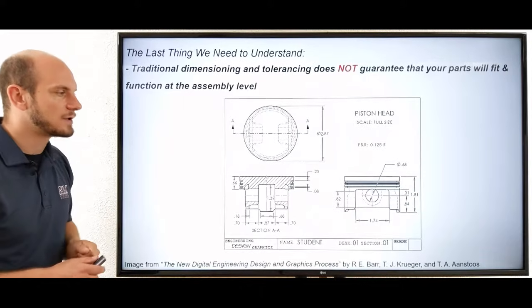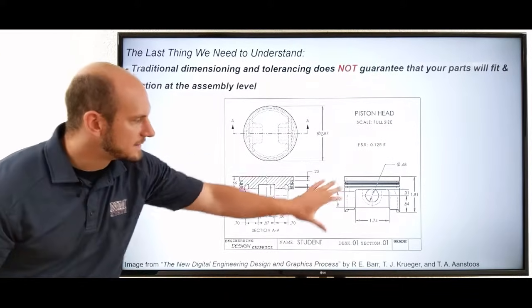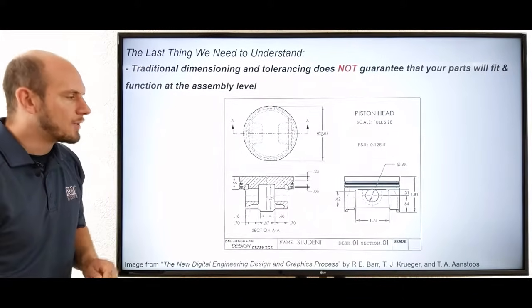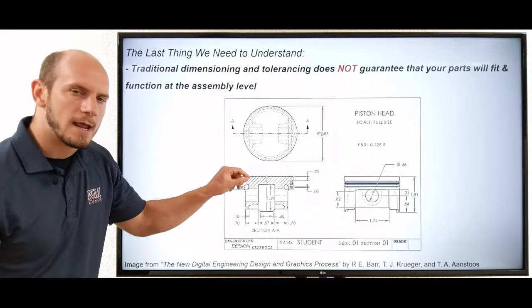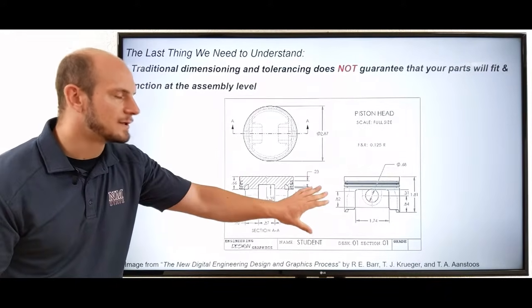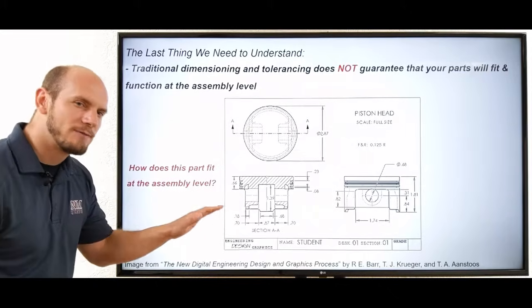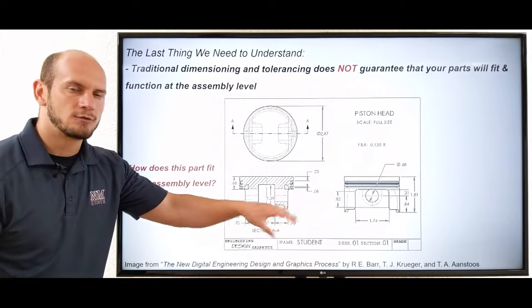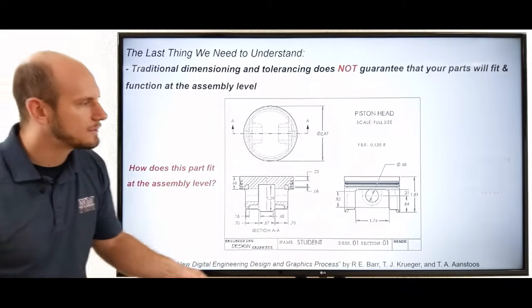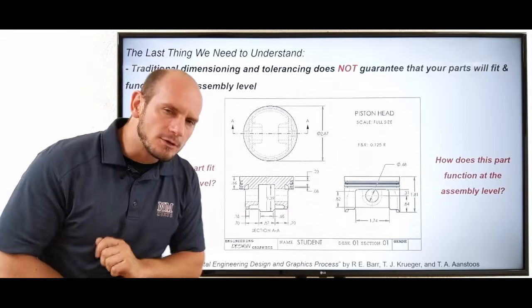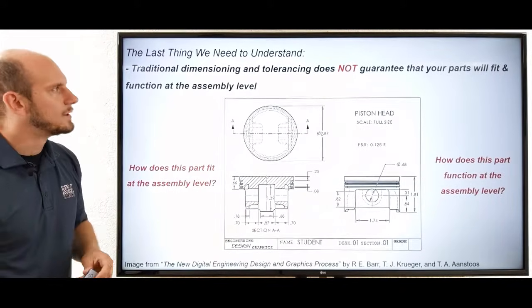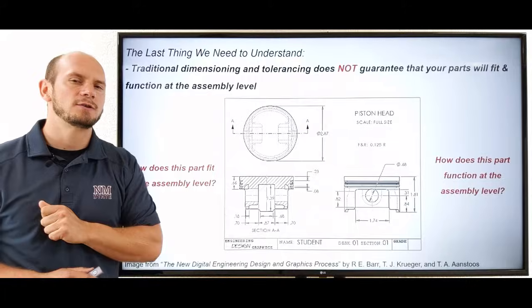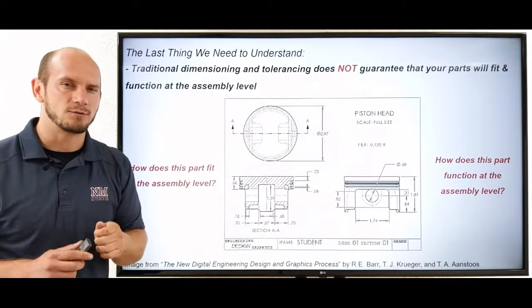Traditional dimensioning and tolerancing, like what you might see on this drawing here, it only gives individual part and individual part feature information. It does not tell you how this part fits at the assembly level. Traditional dimensioning and tolerancing doesn't tell you how this part functions at the assembly level. So there's some gaps in traditional dimensioning and tolerancing that we need to address.